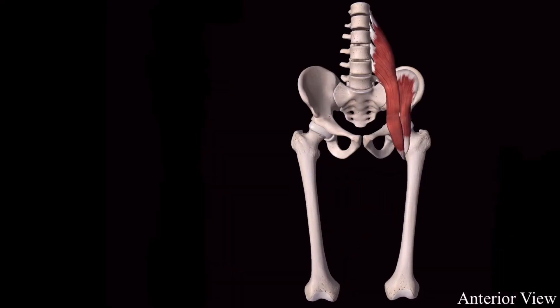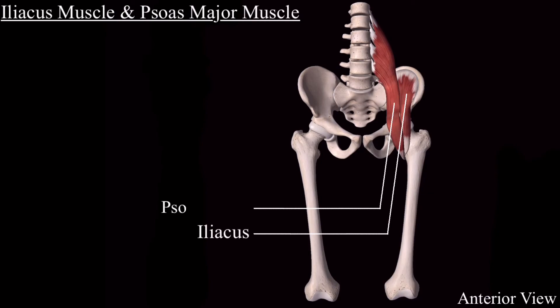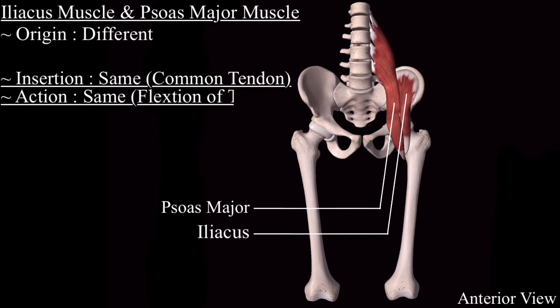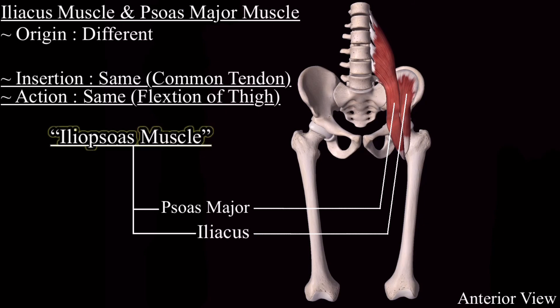Although the iliacus and the psoas major muscle have different origin points in the abdomen, their insertion is through a common tendon and both muscles have the same action — that is flexion of the thigh. That's why the iliacus and the psoas major muscle are sometimes together called the iliopsoas muscle.